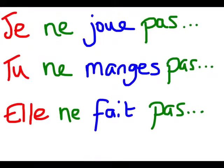Using NE and PAS is very easy. All you need to do is put the NE and the PAS around the verb in the sentence. So in the first sentence, our verb is 'joue' — play. We put the NE before the 'joue' and the PAS after the 'joue'. So 'je ne joue pas' means I do not play, or I don't play. For example, 'je ne joue pas au tennis', 'je ne joue pas au rugby'. In the second example, we've put the NE and the PAS around the verb, so 'tu ne manges pas' means you don't eat. Finally, 'elle ne fait pas'. In each case, we simply put the NE and the PAS around our verb.